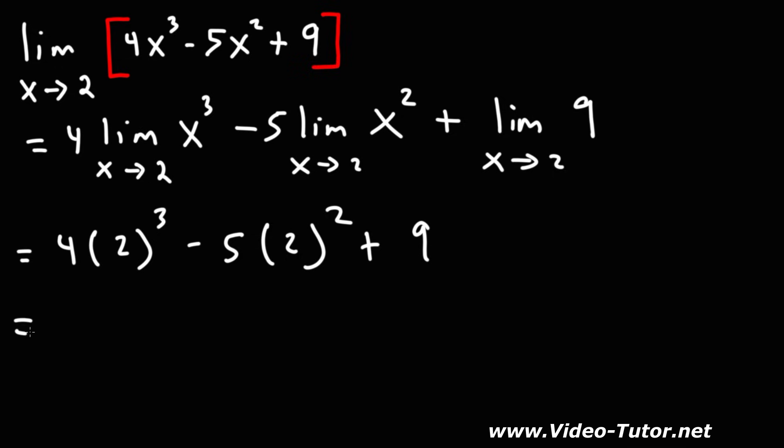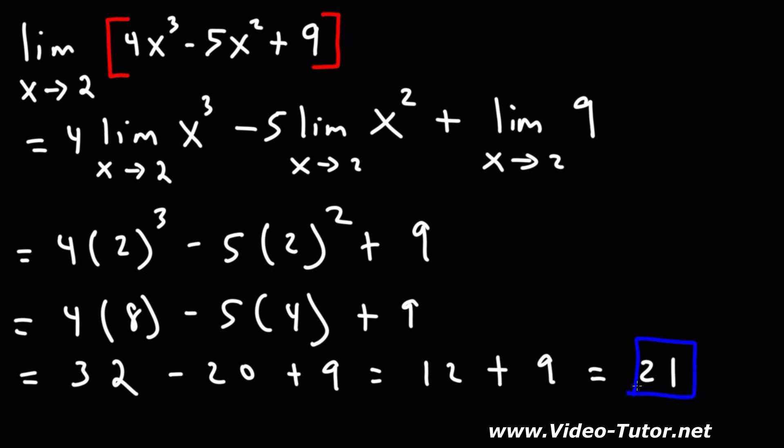So now at this point, we just have to do the math. 2 to the third power, 2 times 2 times 2 is 8. 2 squared is 4. Now 4 times 8 is 32, 5 times 4 is 20. And 32 minus 20 is 12, and 12 plus 9 is 21. So that's how you can evaluate the limit of a polynomial function.